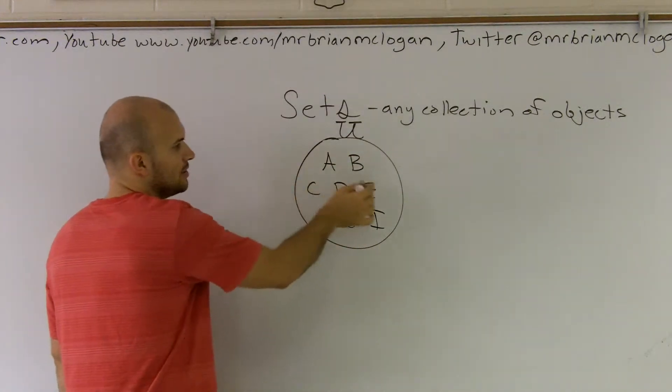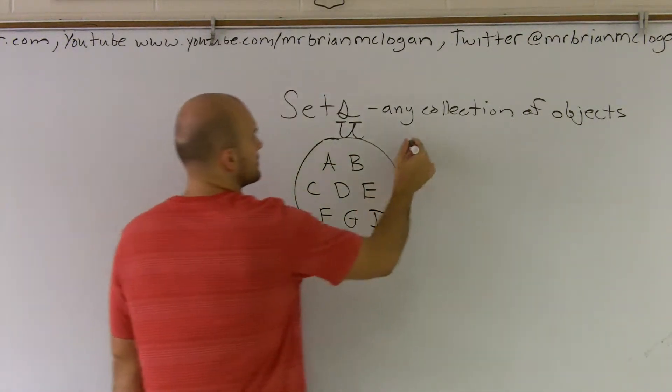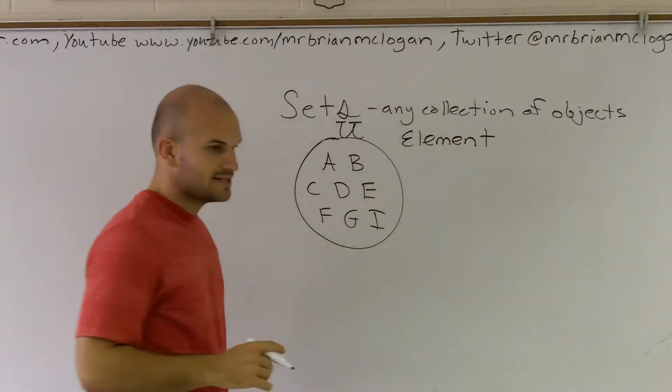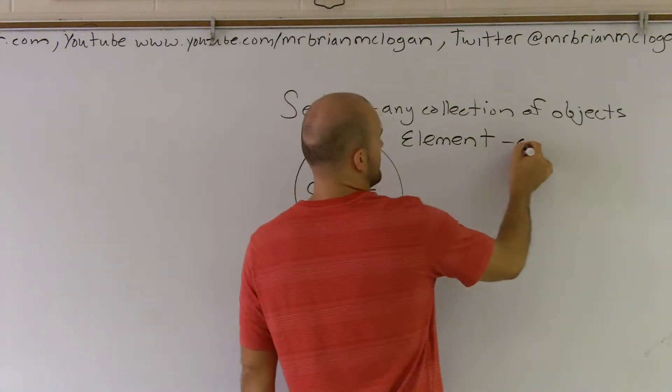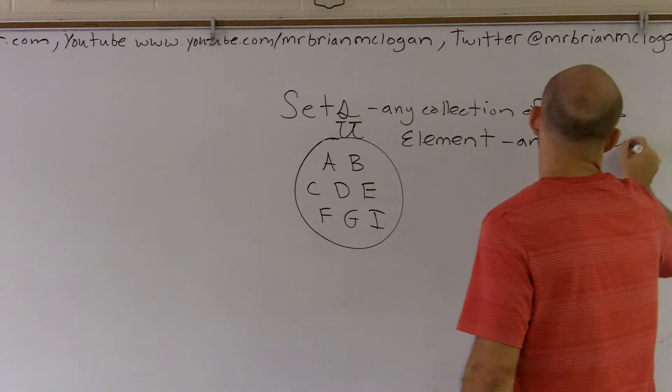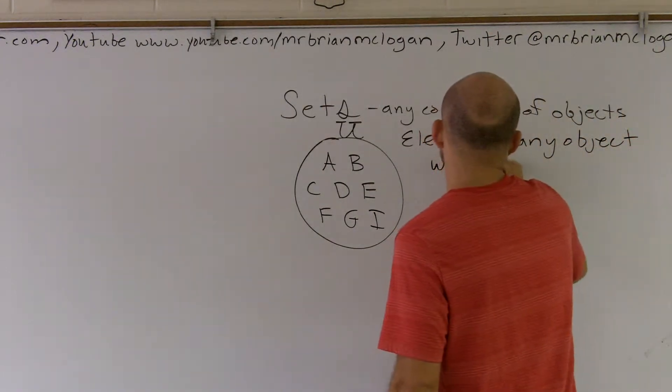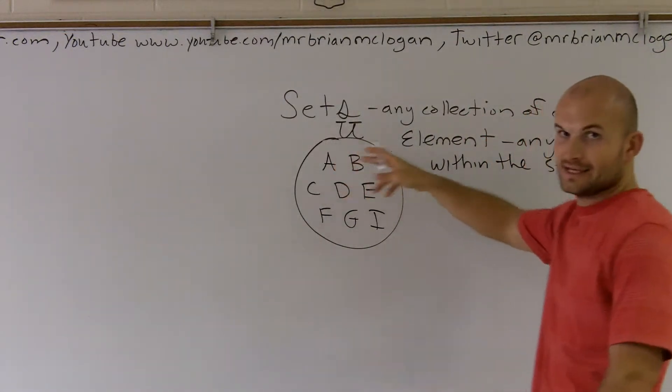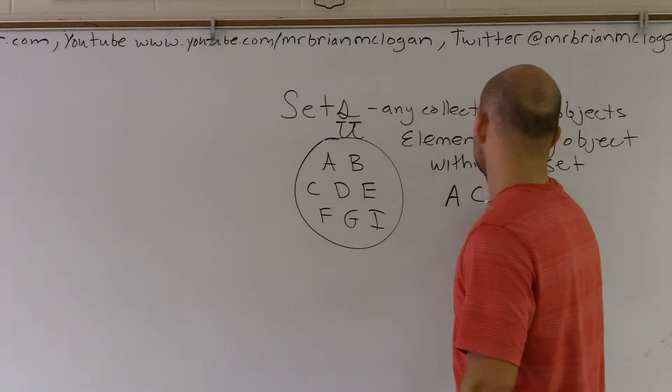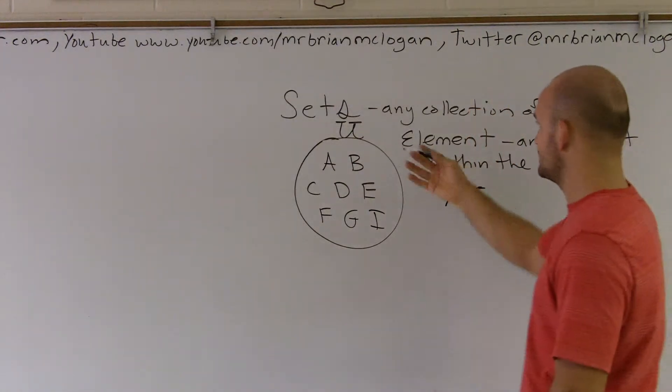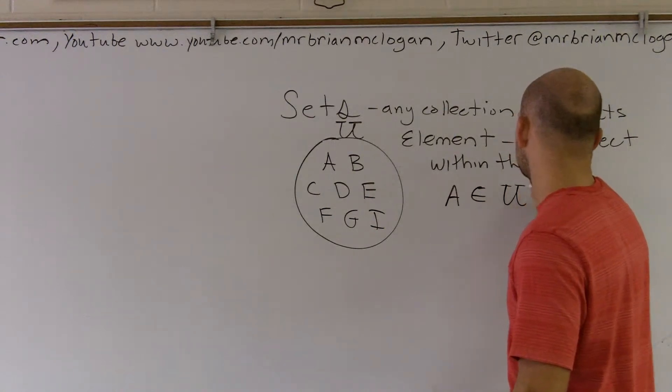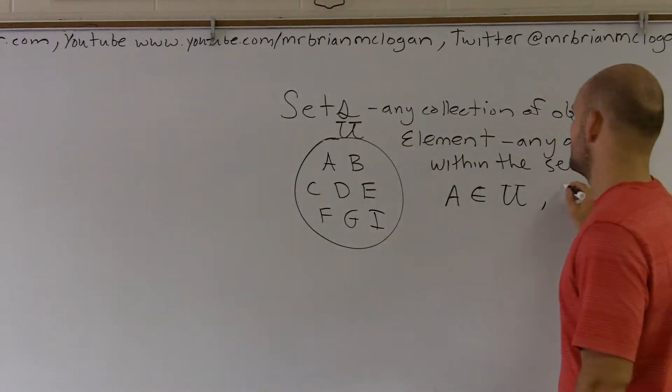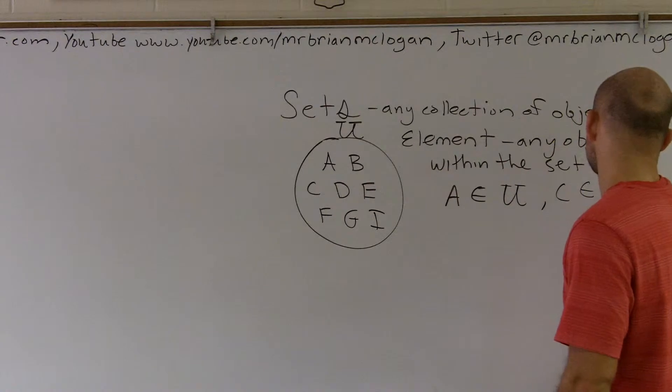So, next thing, each one of these little letters in here are what we call an element. So, an element is any object that's in the set. And the way that we like to write that is, let's say you could say A is within the set. So, A is contained, that's what that means, is contained in the universal set. And if I was going to give this a name, I'd say A is contained in the name of that set. You can also say that C is an element or contained in my universal set.